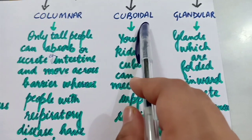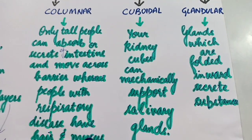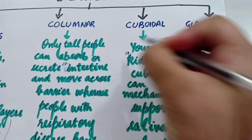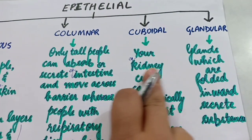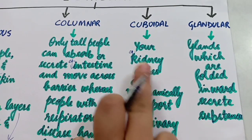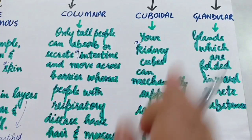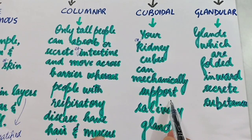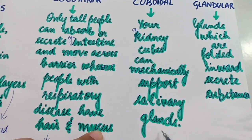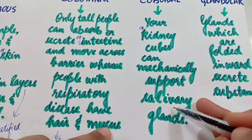The third type is cuboidal epithelium. The sentence is: 'Your kidney cubes can mechanically support salivary glands.' The word 'kidney' tells us that an example of cuboidal epithelium is kidney tubules — they are present in the lining of kidney tubules. The cells are cube-shaped. The main function of cuboidal epithelium is that it provides mechanical support. Another example is salivary glands — it is also present in the ducts of the salivary glands.